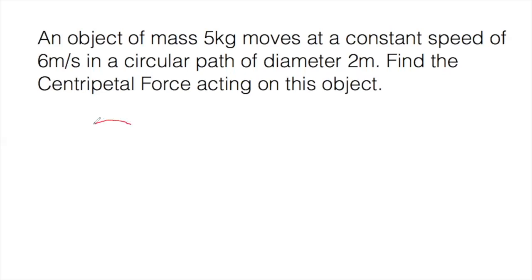Essentially what we have, when we look at this example, is an object that's moving in a circular horizontal path. So this is going to be the overhead view. And that object has a mass M that is going to be equal to 5 kilograms.